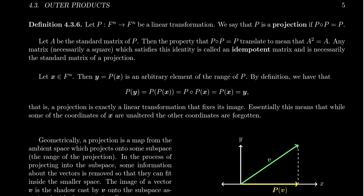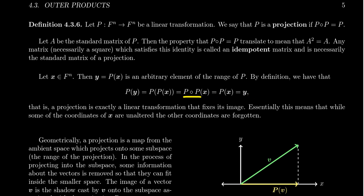If you take a vector x inside the domain Fⁿ and let y be the image of x with respect to projection p, then p of y equals p(p(x)), since we replace y with p(x). But p(p(x)) means applying the transformation twice, and since p is a projection you get back p(x), which equals y. So a projection map is exactly those linear transformations for which the image is fixed — some coordinates of x are unaltered while the other coordinates are forgotten.